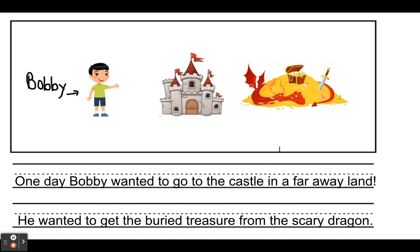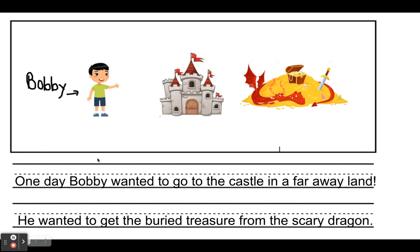Now I didn't finish my story because I kind of wrote a beginning — I wrote why my character was going to go on an adventure — but I didn't write a middle and I didn't write an end. So I'm going to do that now. I'm going to write about what exactly happened to Bobby when he went to the castle. Did he get stopped by the castle guards? Did he get hurt along the way? Was he able to defeat the dragon and get the treasure? I'm going to think about that and then write about it.